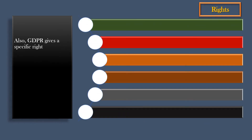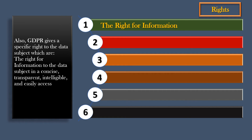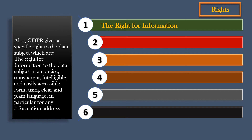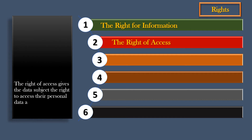GDPR gives specific rights to the data subject, which are: the right to information in a concise, transparent, intelligible, and easily accessible form, using clear and plain language, in particular for any information addressed specifically to a child. The right of access gives the data subject the right to access their personal data and information about how this personal data is being processed.